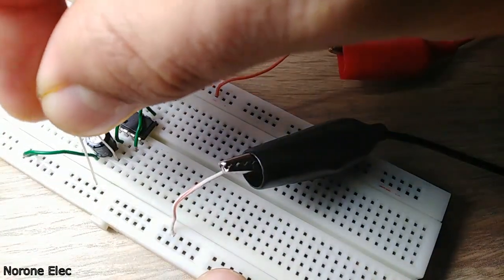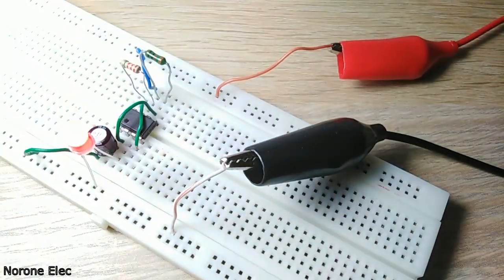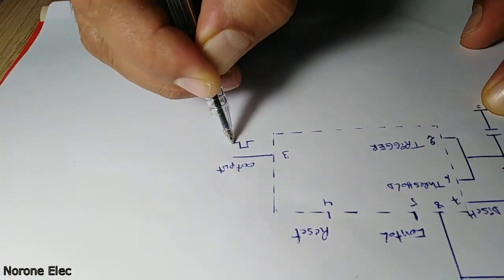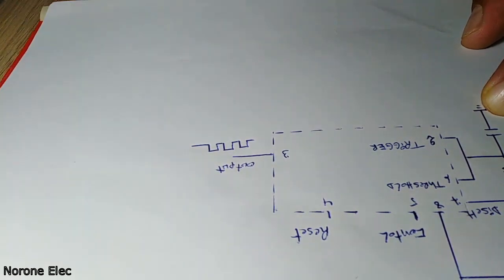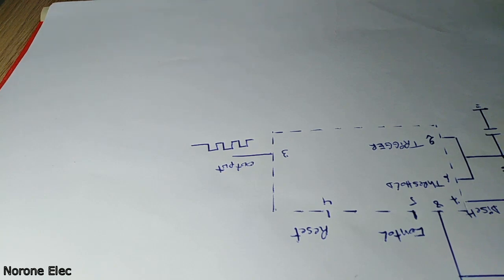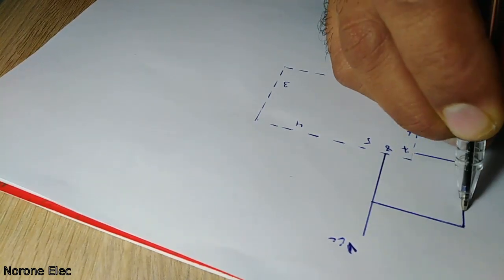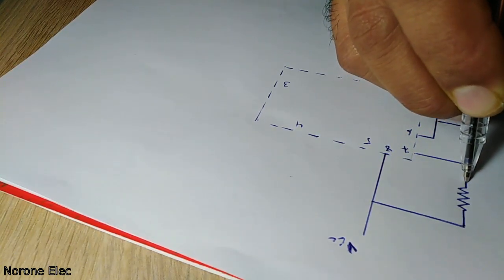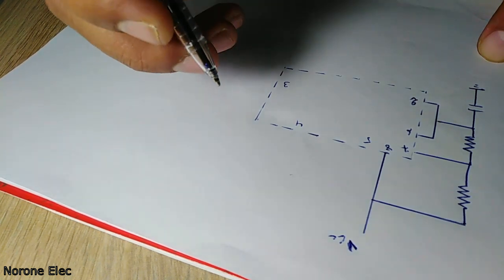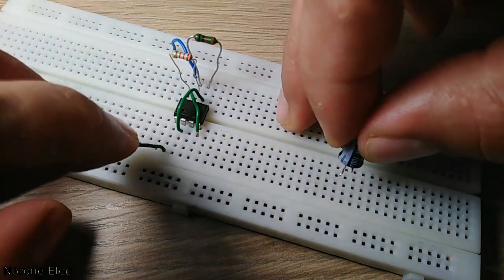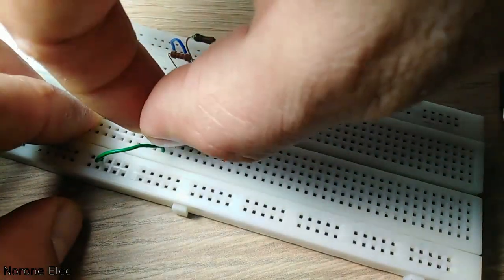In these projects, the 555 timer IC must work in astable mode to produce a square wave with time high and time low. The typical astable arrangement has a resistor R1 from VCC to pin 7, and R2 from pin 7 to pin 6 and 2, connected to a capacitor to ground. Don't forget to connect pin 4 to pin 8 to plus VCC, and finally pin 1 to ground.